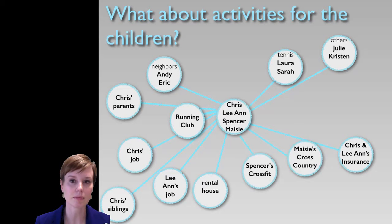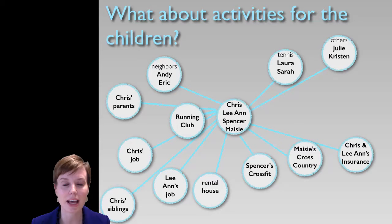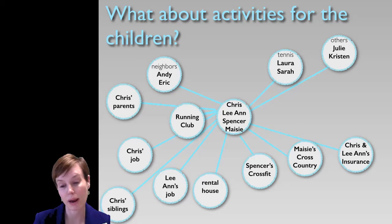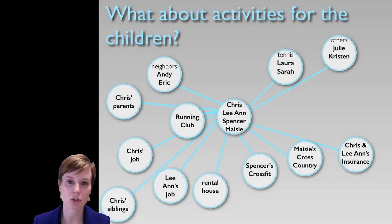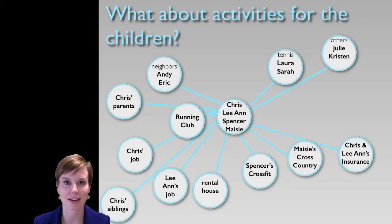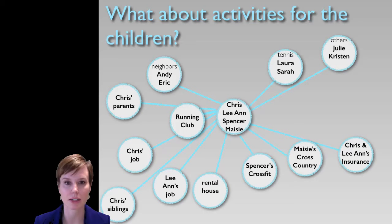Next we want to ask about activities, groups, and routines that the children in the house are involved in. For my children, we would add Maisie's cross-country team and Spencer's CrossFit activities — a boot camp-style weight training group he does every afternoon after school. We could also add a track team, a dance group that Maisie's involved in, and a cotillion group. These can be athletic activities, social groups, or other recreational pursuits, and we could add each of those to the eco-map.